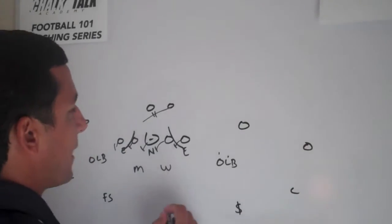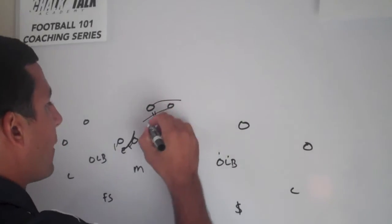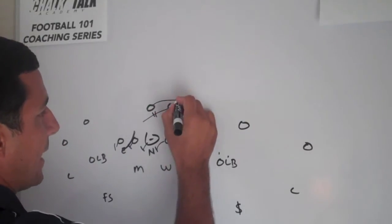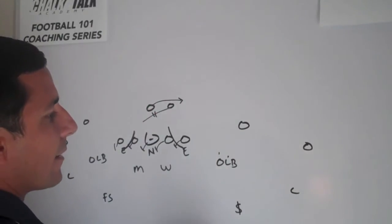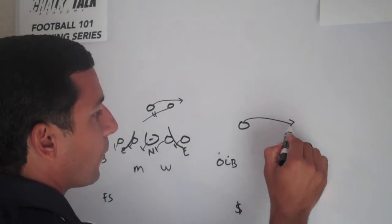Now we talked about how to take away the quarterback if they're just going to be a zone read team that's going to pull the football here and just have the quarterback as a threat. Now we're going to talk about how to defend the zone read bubble. So now you're going to get the bubble route here by number one.